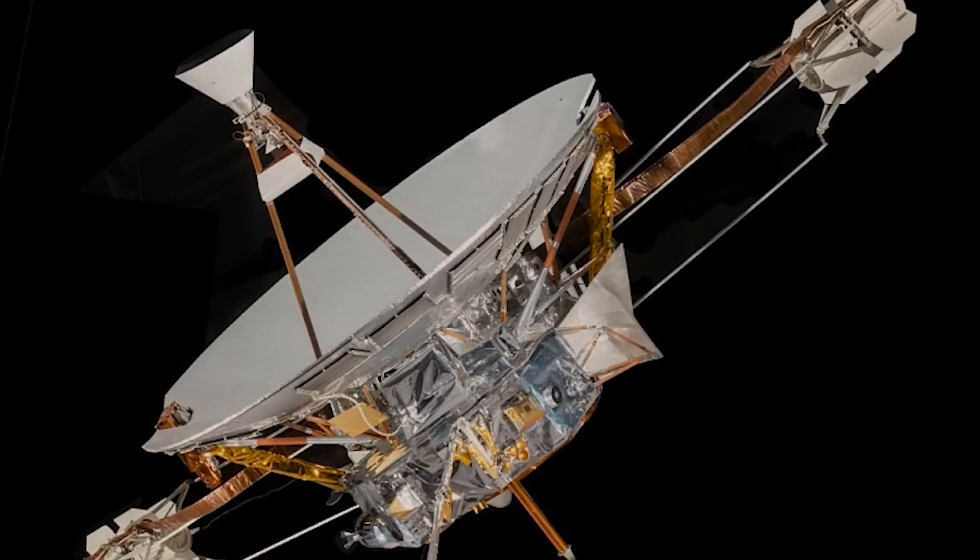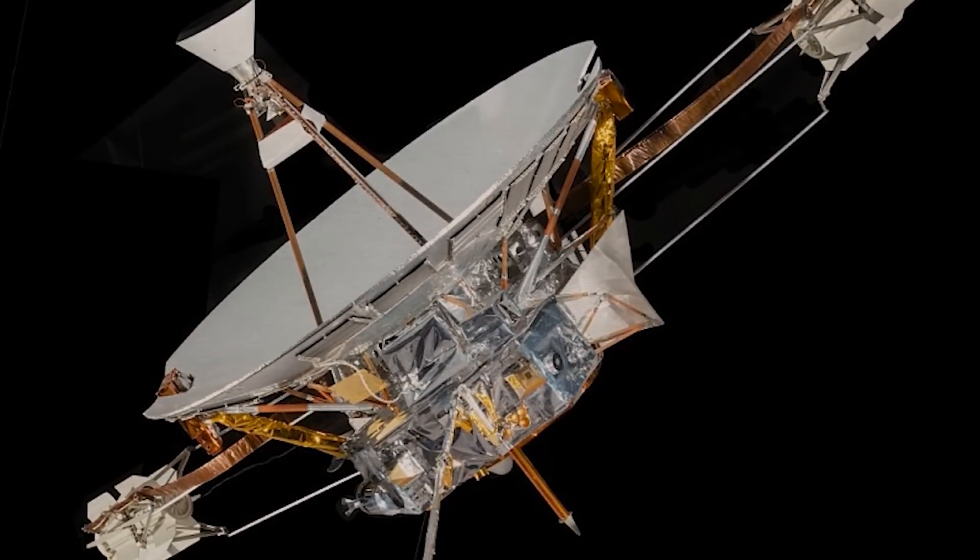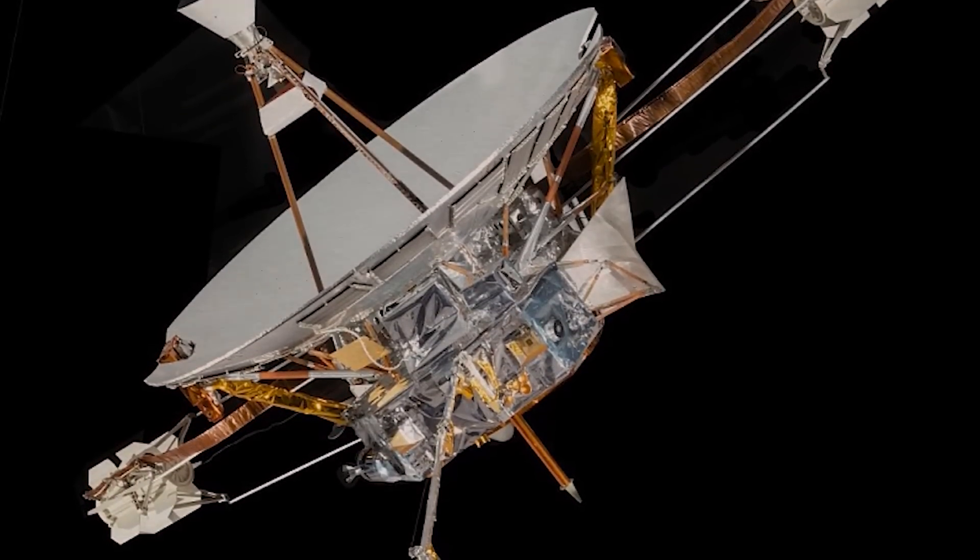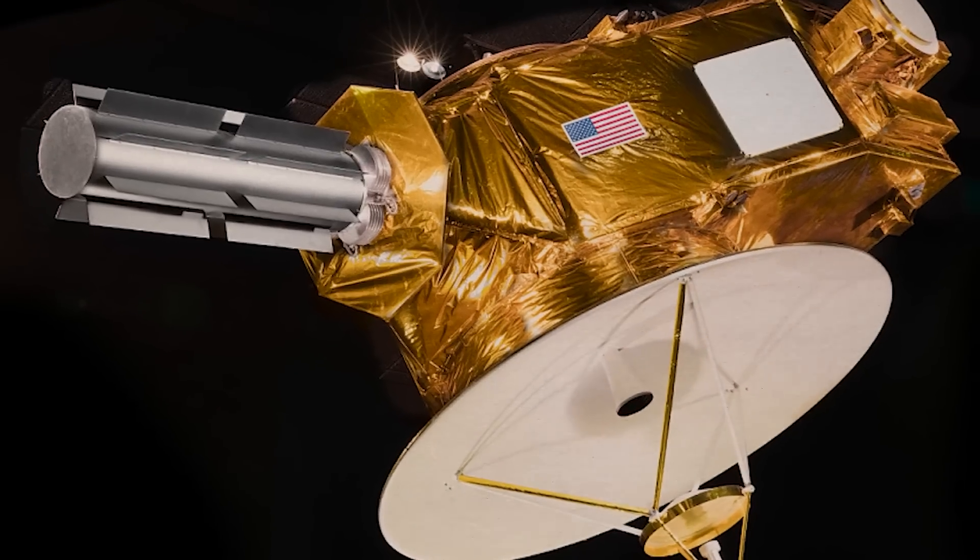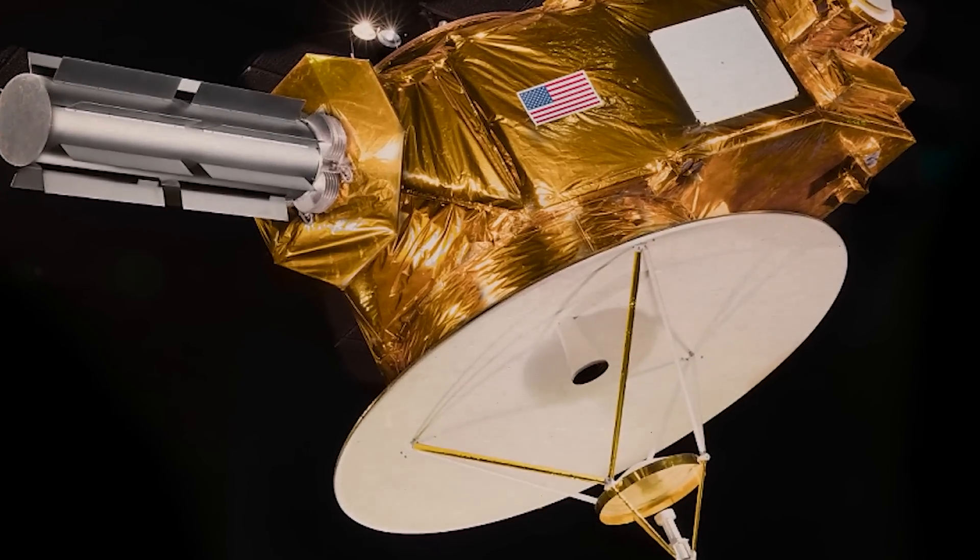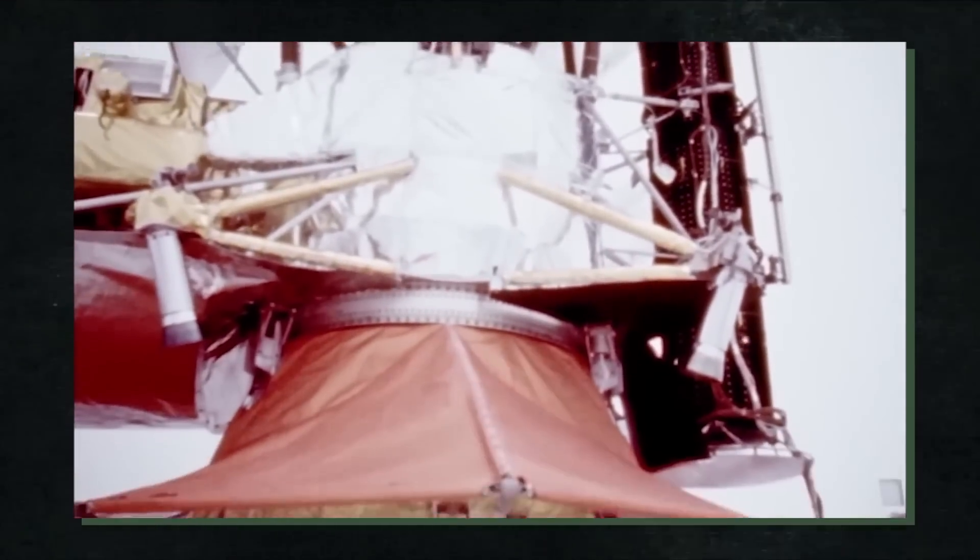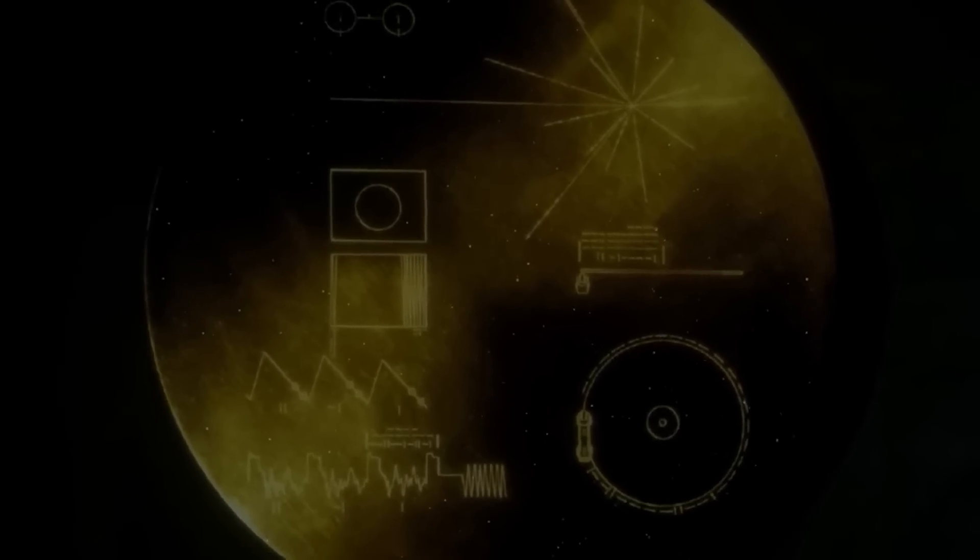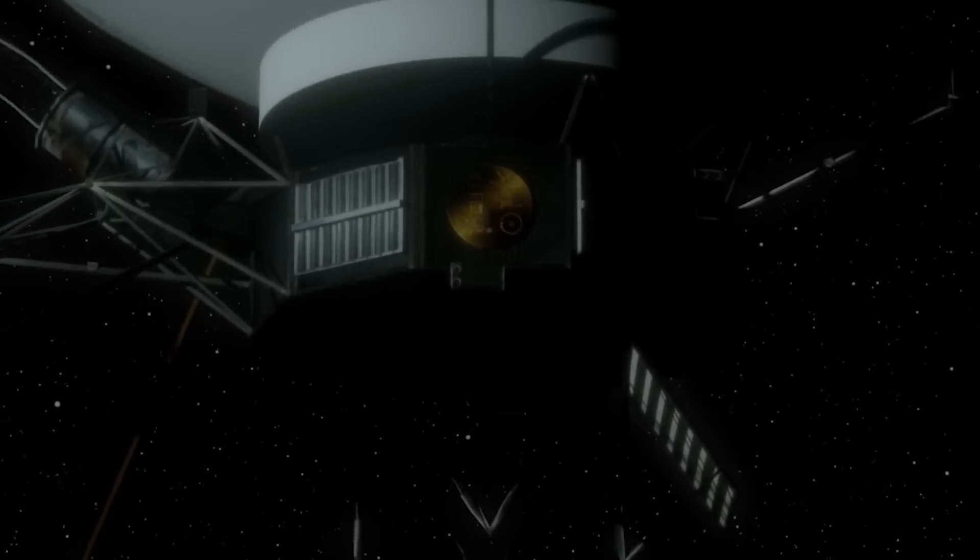Pioneers 10 and 11 are no longer in operation, but the radioisotope thermoelectric generators that power New Horizons and both Voyager spacecraft enable them to continue operating. Ahead of the slightly slower Voyager 2, which is only 18.8 billion kilometers away, Voyager 1 has passed all other spacecraft and is now the most distant at a distance of 22 billion kilometers.